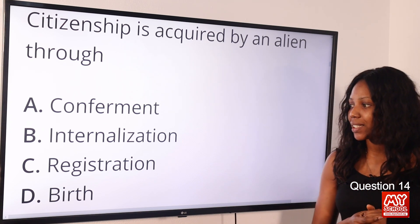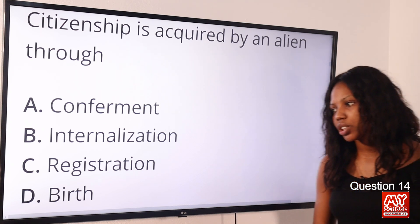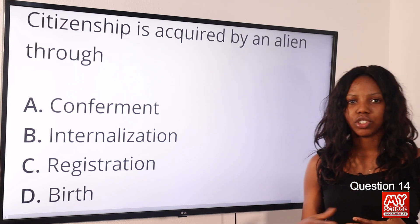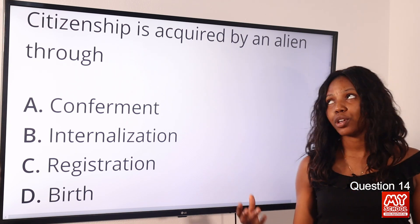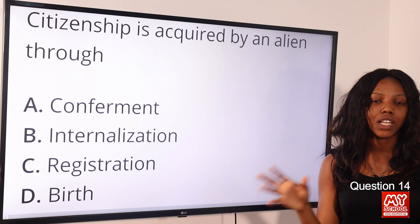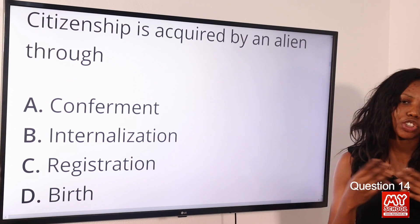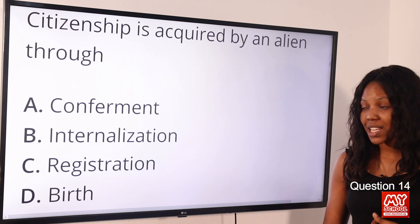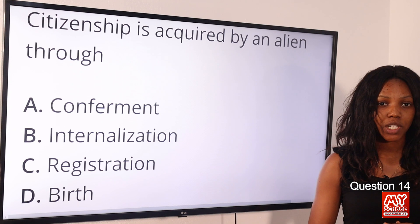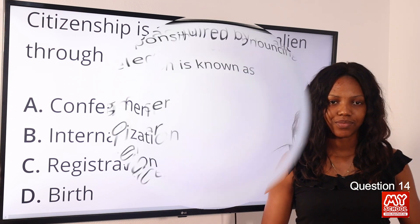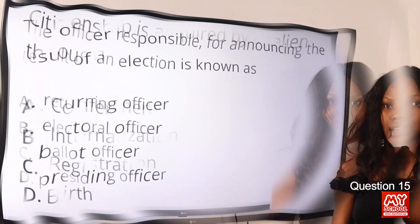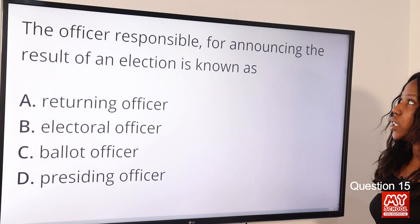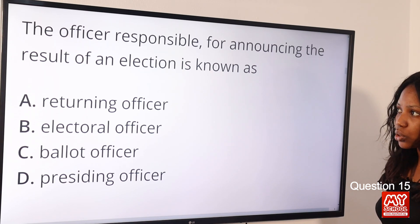Question 14: Citizenship is acquired by an alien through — option A: conferment; option B: internalization; option C: registration; option D: birth. The answer is option C, registration. An alien is a stranger — a foreigner — and such a person acquires citizenship through registration.